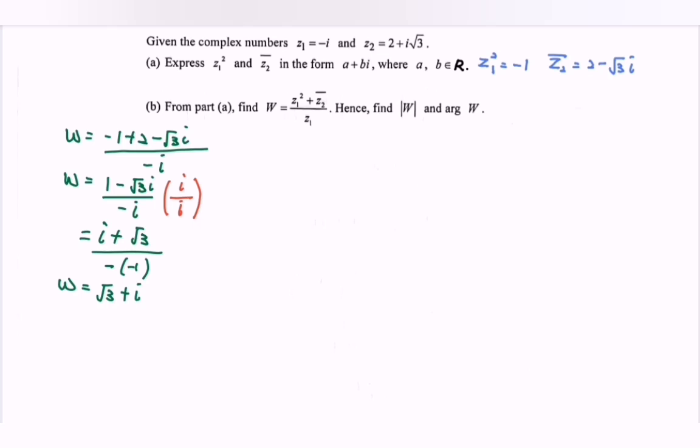Hence, find the modulus of w and also the argument of w. So step number 1, have the diagram. So here we have w in the first quadrant. So here will be the basic angle.